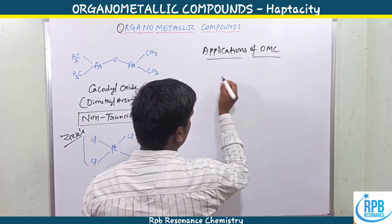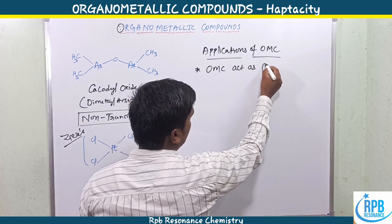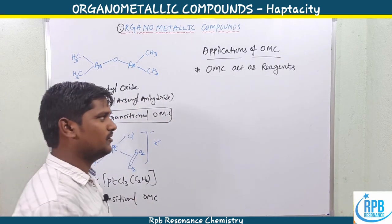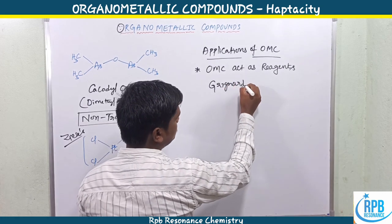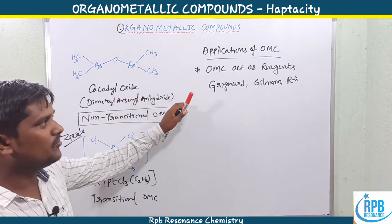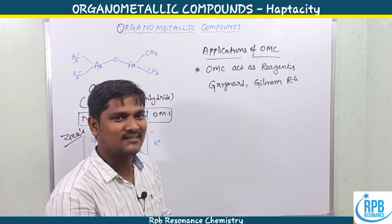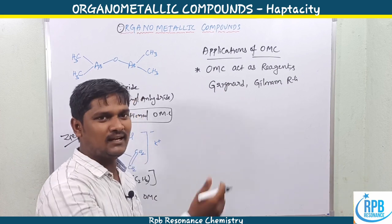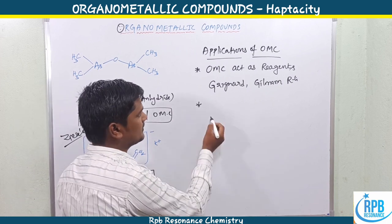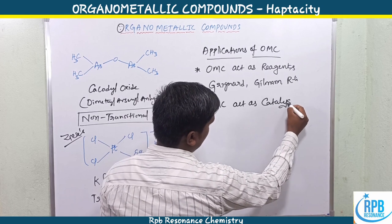First application: organometallic compounds act as reagents. We know very common reagents like Grignard reagents, Gilman reagents, and organolithium compounds. These kinds of organometallic compounds are used as reagents in organic synthesis - they are versatile reagents for many organic molecule syntheses.